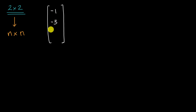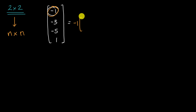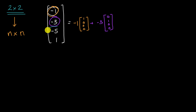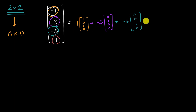A four-dimensional vector will just have four numbers — negative one, negative three, negative five, and one. We could view it as being a weighted sum of the unit vectors in the different dimensions of four-dimensional space. This would be equal to negative one times the (1,0,0,0) vector, plus negative three times the (0,1,0,0) vector, plus negative five times the (0,0,1,0) vector, plus one times the (0,0,0,1) vector.